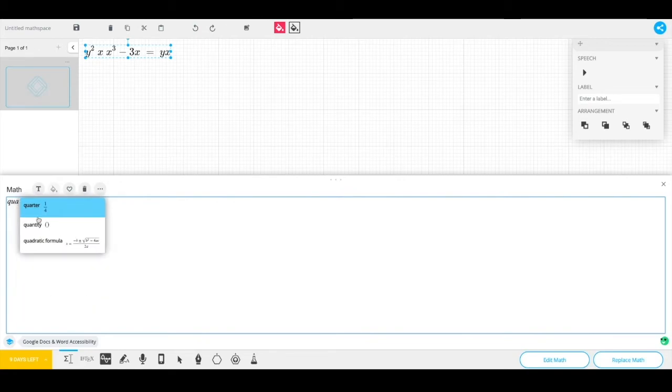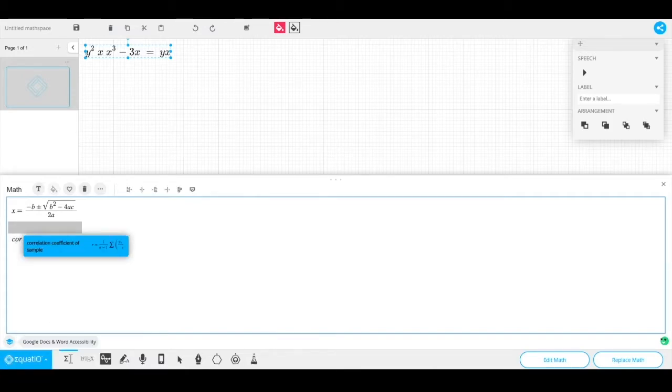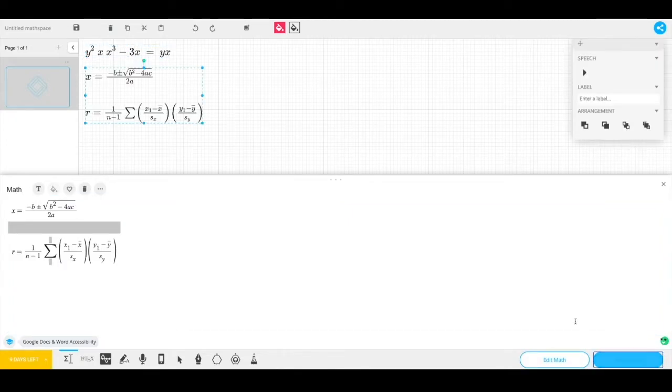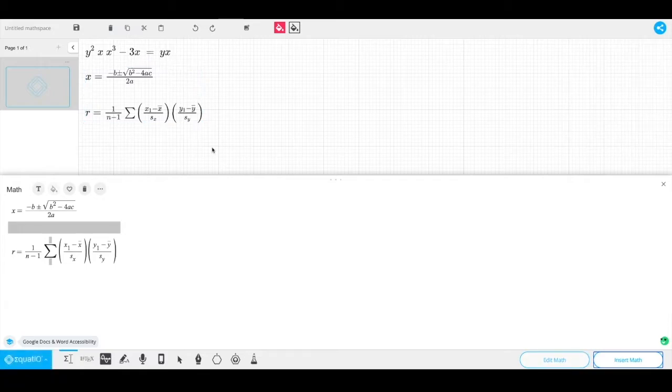If I want to insert a common formula such as the quadratic formula or the correlation coefficient, I can start typing that name into the math editor and the prediction tool will bring that formula up. When I am ready to insert the math, I can select the insert math button and it will bring it into my document.